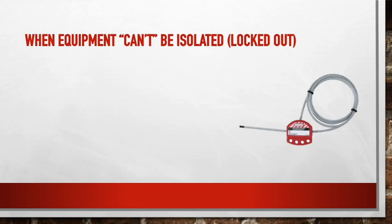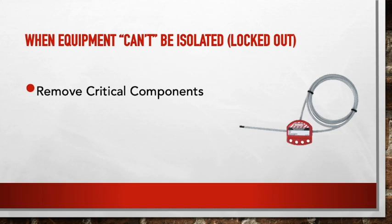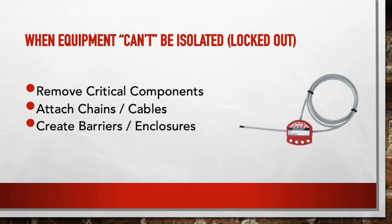There are certain instances where things can't be locked out — there's no lock receptacle to place a lock. In those cases you need to remove critical components, if possible. For example, with a pumping unit you can attach chains and cables to lock out the weight so it doesn't spin, or create barriers and enclosures so people can't enter an area where energy could be released.